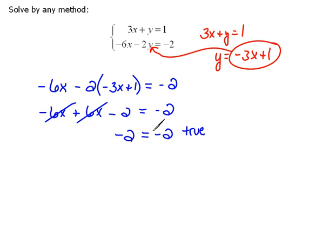Now, normally when we have something like this happen, we would say it's all real numbers or all real solutions. But we have to be careful. It is all real solutions that work in this equation. Every solution that works, or every x and y value that works in this equation, will also work in the other one. Because this is what's called a dependent system.